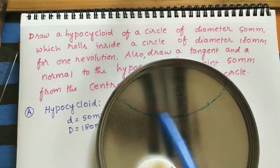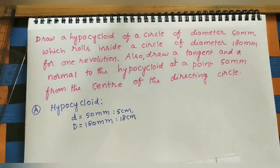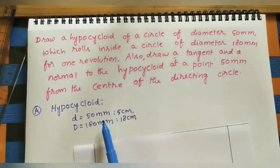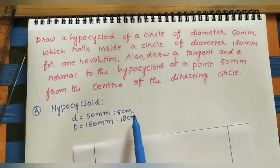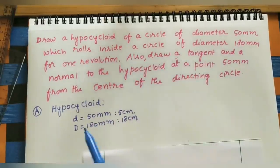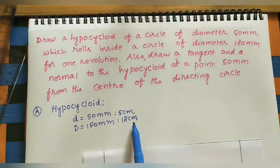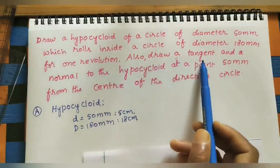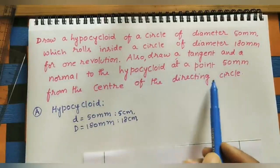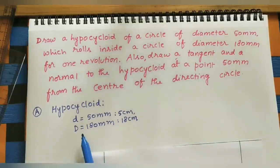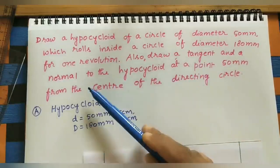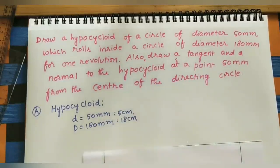Here we have one complete rotation of the smaller circle. The given data: smaller circle diameter d = 50 mm (5 cm), rolling inside a bigger circle of diameter D = 180 mm (18 cm), for one revolution. We also need to draw a tangent and normal to the hypocycloid at a point 50 mm from the center of the directing circle, which means the bigger circle.